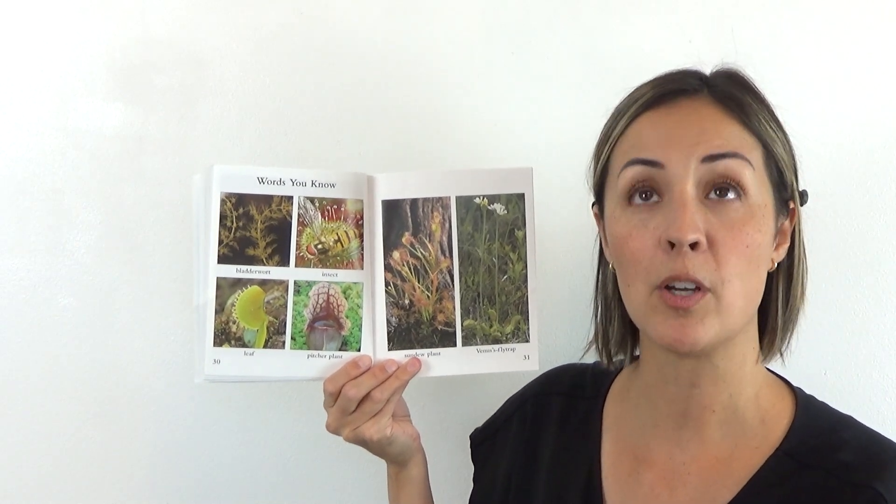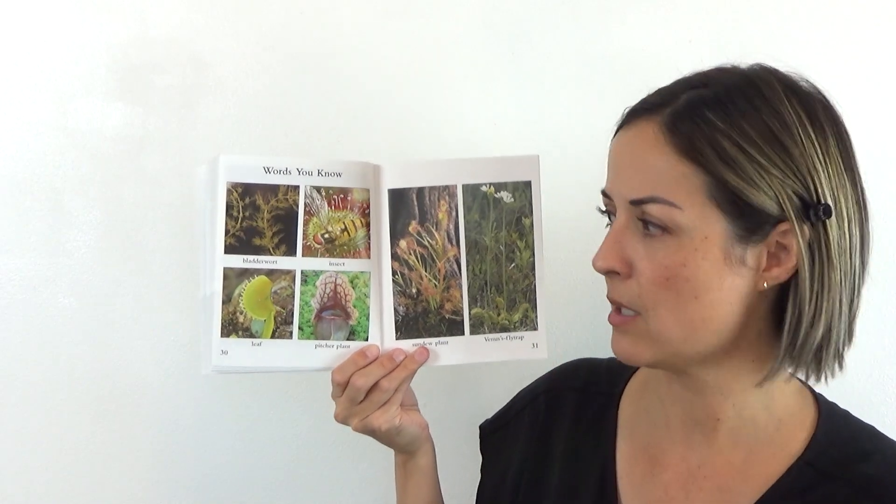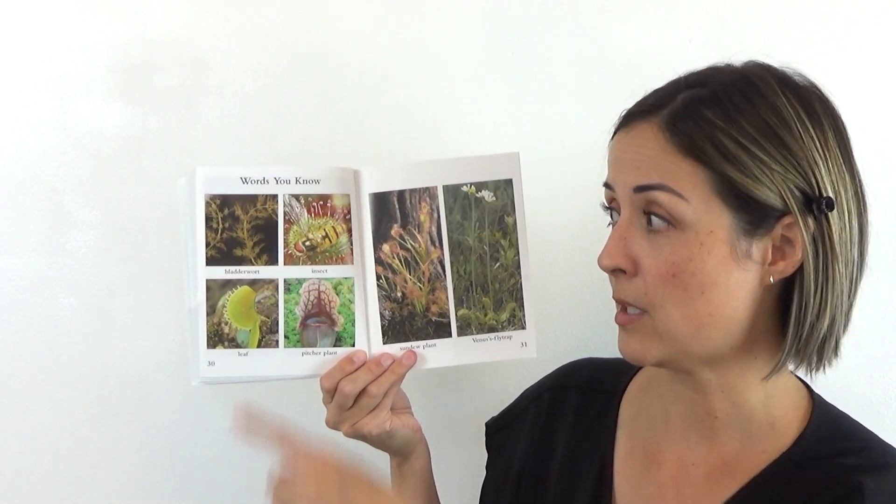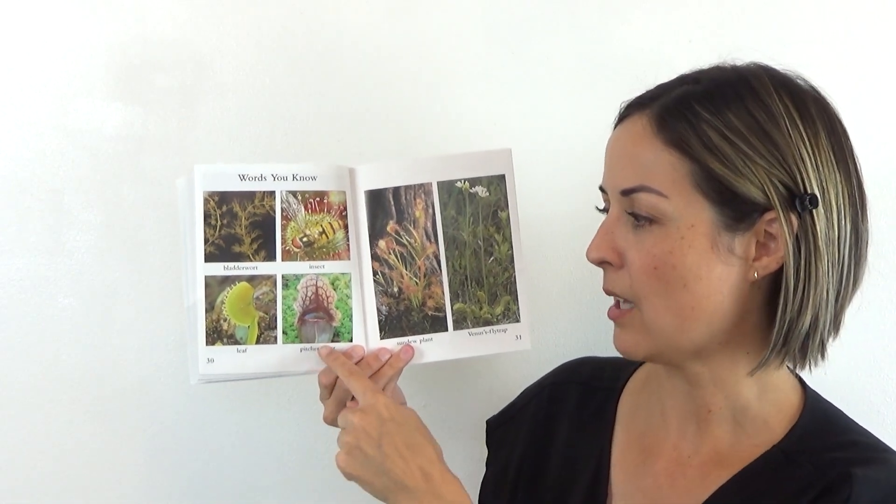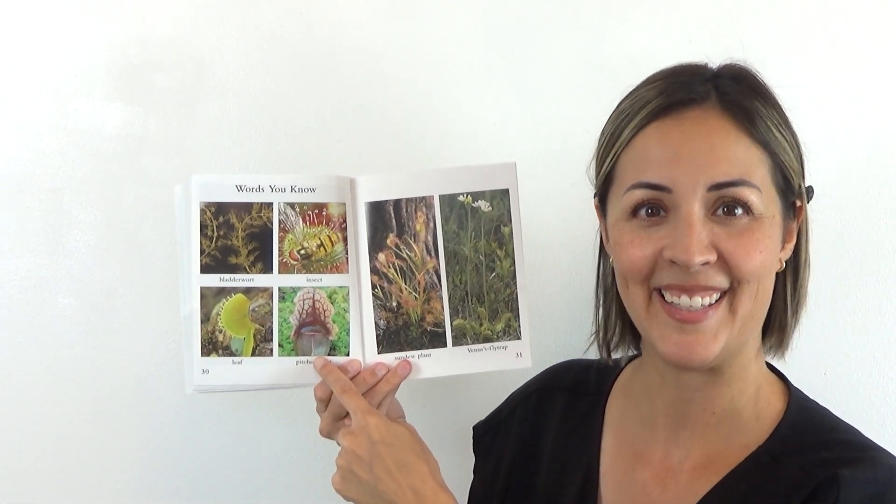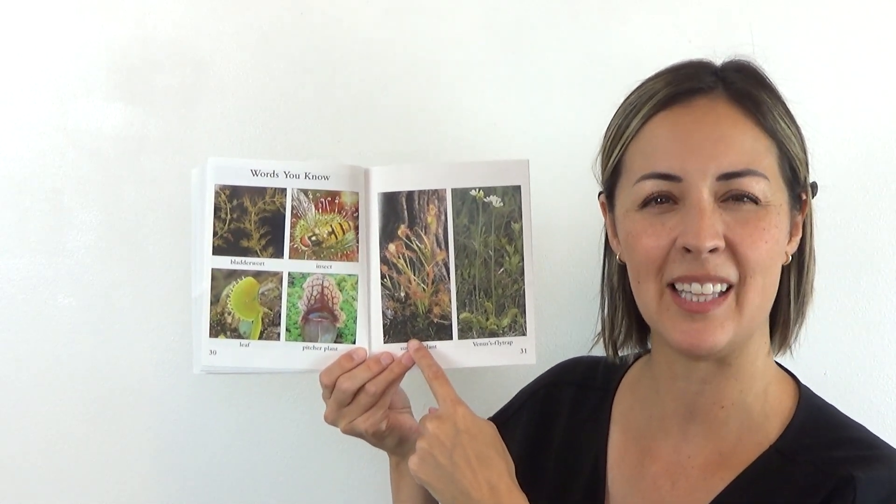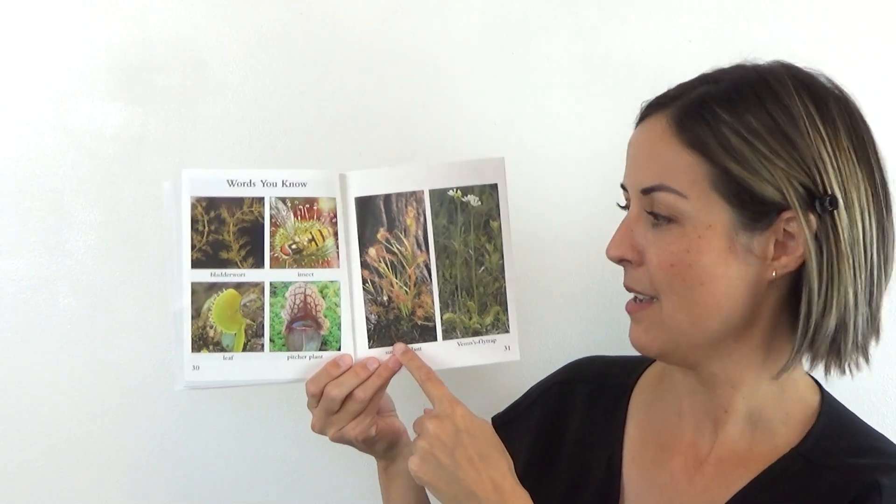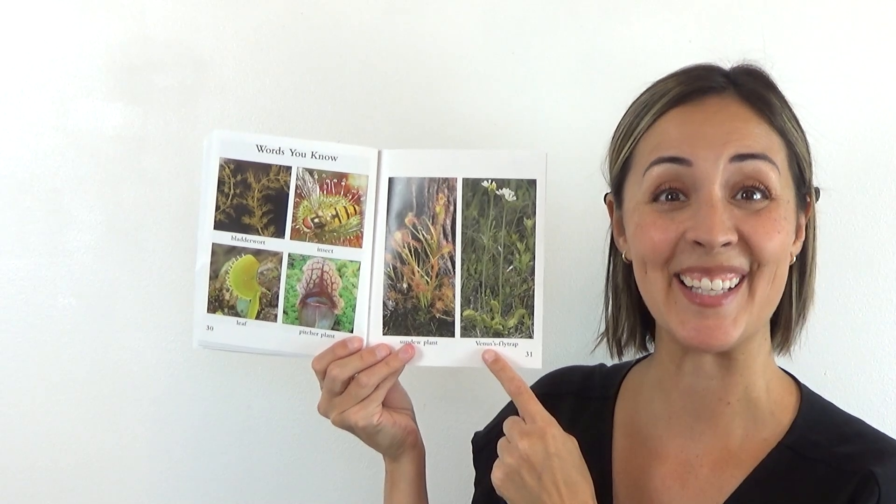I just want to take a quick vote. You're going to raise your hand when I say the one that you liked best, but you can only vote once. Raise your hand if the one you thought was the coolest was the bladderwort. Okay. Raise your hand if you liked the pitcher plant. Okay. Raise your hand if you liked the sundew plant with the sticky little hairs. Okay. Raise your hand if you liked the Venus flytrap. Lots of kids. Good. Good listening. Okay.